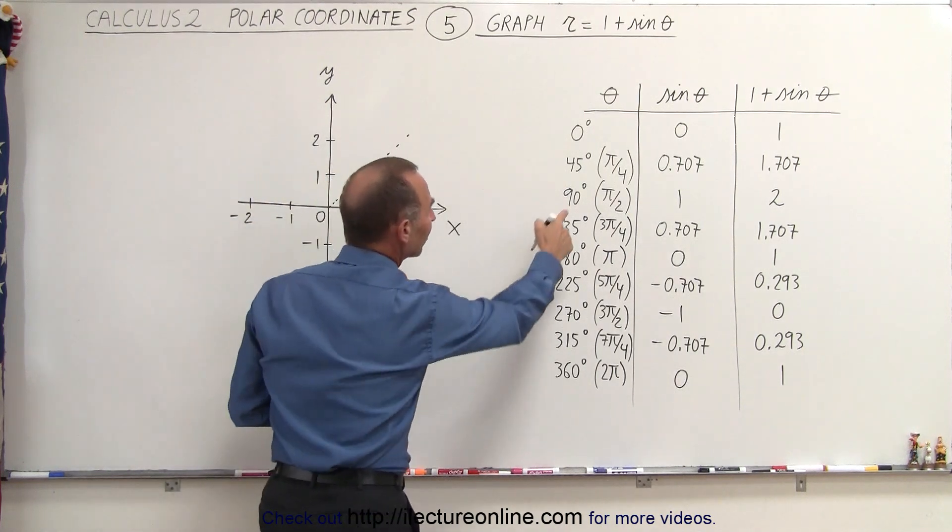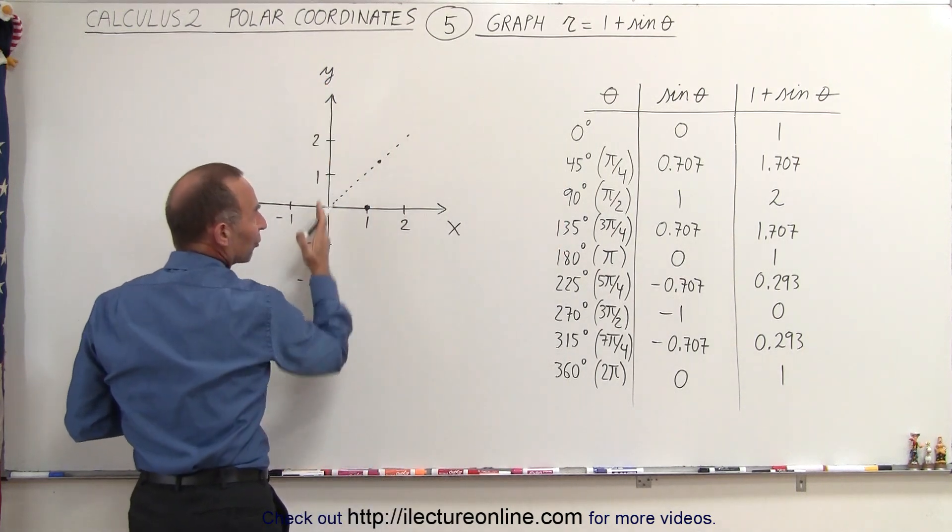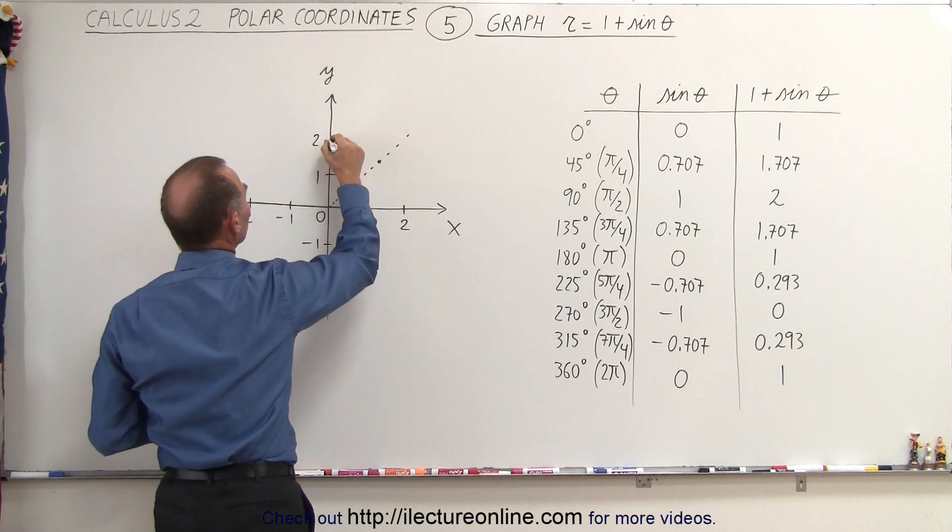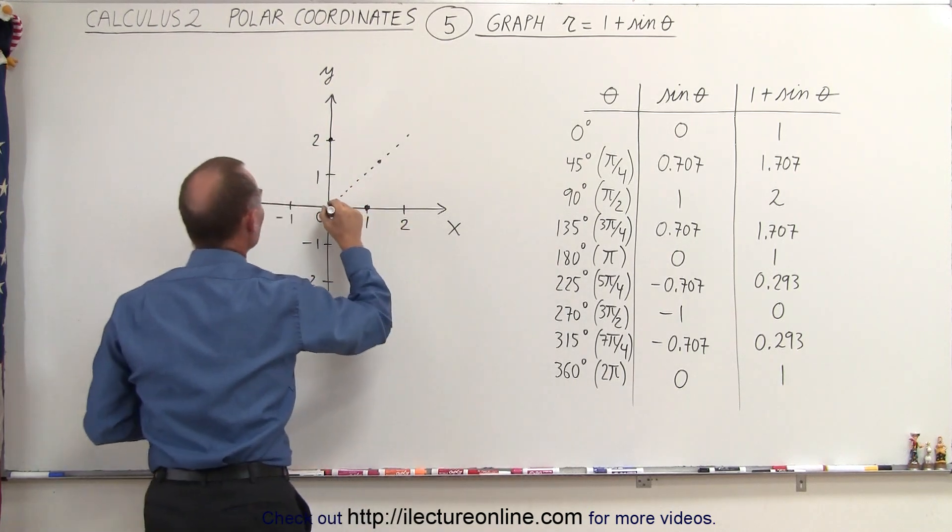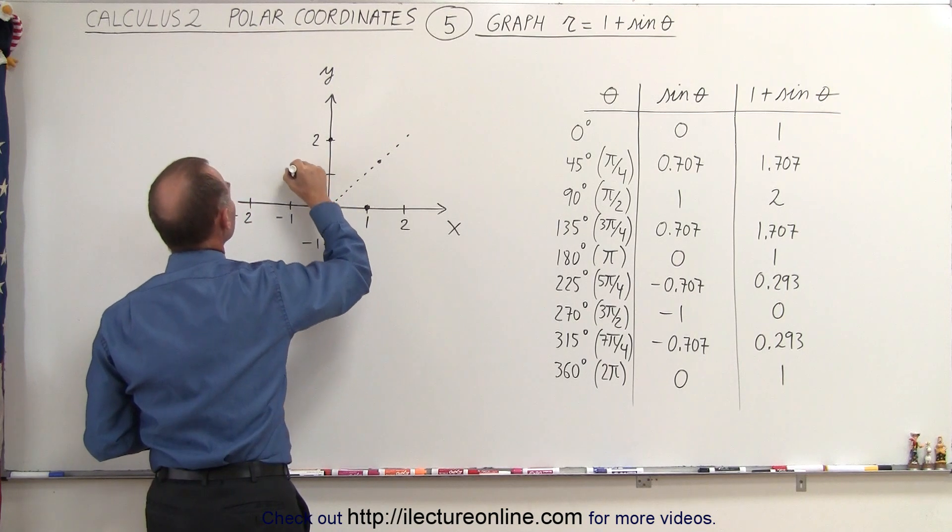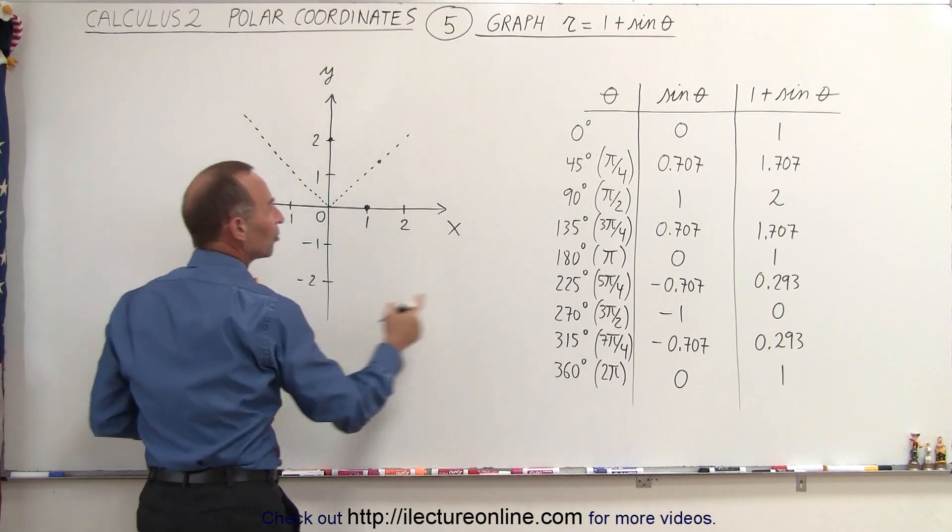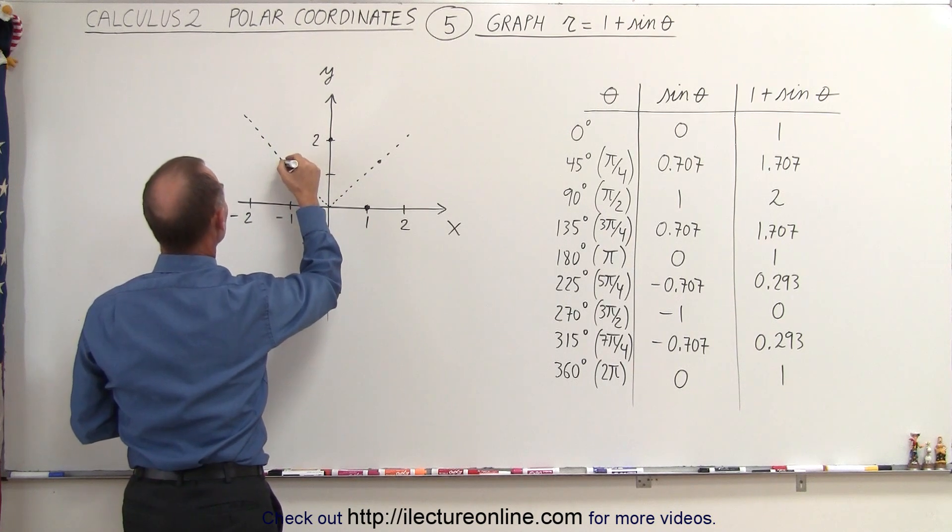When the angle is 90 degrees, along the positive y-axis, the function equals 2. Then, at 135 degrees along this line, the function is 1.707, right about there.